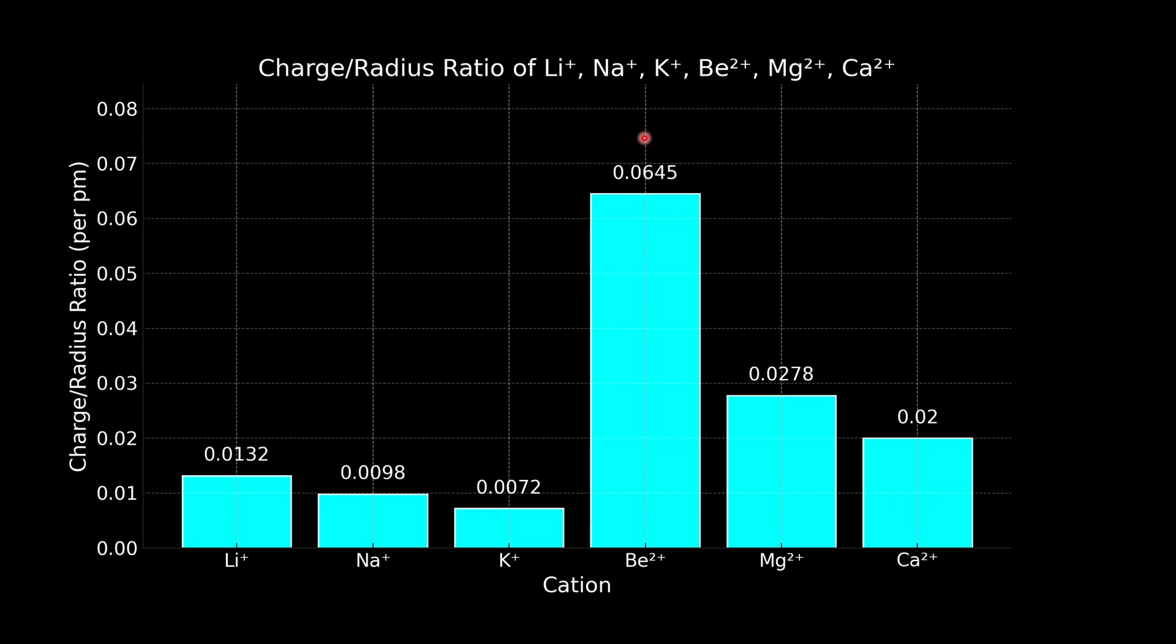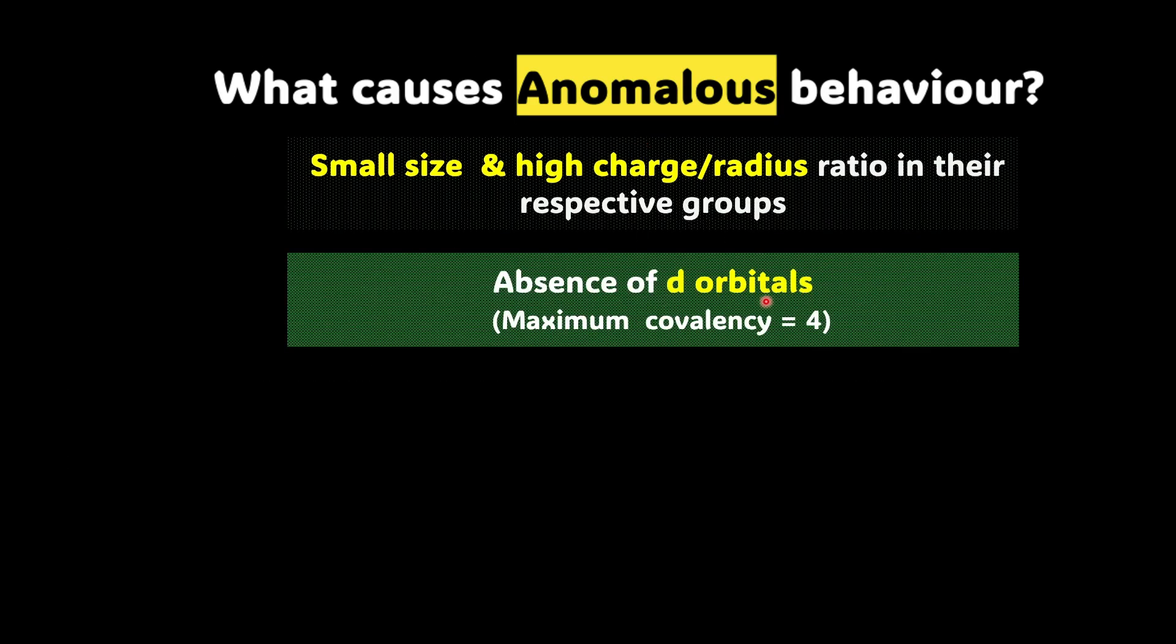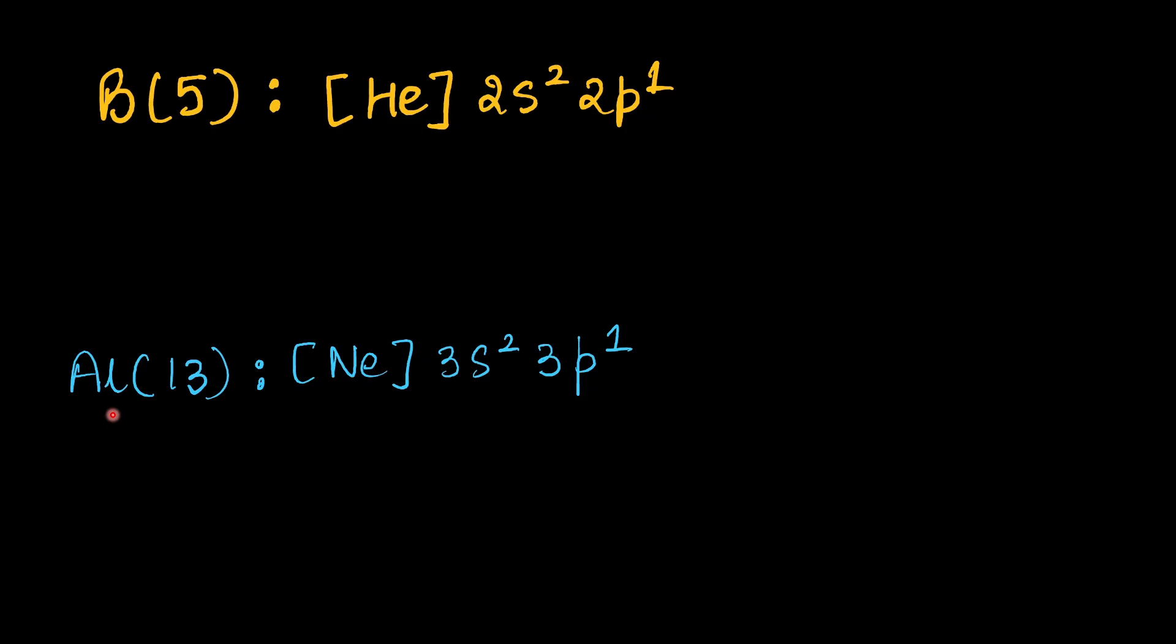In fact, since we are talking about second period elements, of course, there is no d orbital. d orbital starts from n equal to 3, principal quantum number equal to 3. We have nothing called 2d. So, this absence of d orbital results in actually a maximum covalency of 4. How? Let's understand it with an example. Here is boron whose atomic number is 5, and the electronic configuration can be written like this: helium 2s2, 2p1. And if we talk about aluminium, it has atomic number 13, and the electronic configuration can be written like this: neon 3s2, 3p1.